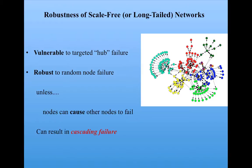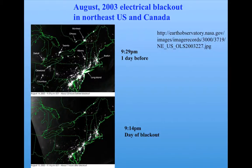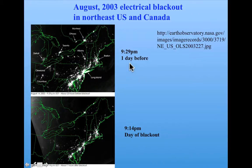Unless nodes can cause other nodes to fail — and then we can get something called cascading failure. An example is the power grid. Here's a satellite picture of a region in the Northeast U.S. and Canada before and after a huge electrical blackout that occurred in August 2003.